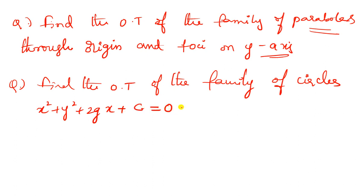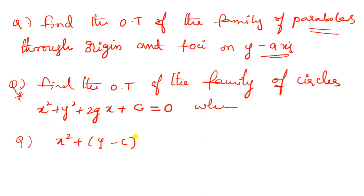Find the orthogonal trajectories of the family of circles: x-squared plus y-squared plus 2gx plus c equals 0, where g is the parameter. That means x-squared plus y-squared plus 2gx plus 2fy plus c equals 0 — the circle is centered on the x-axis. Also: x plus y-minus-c whole-squared equals c-squared. This is the circle equation.